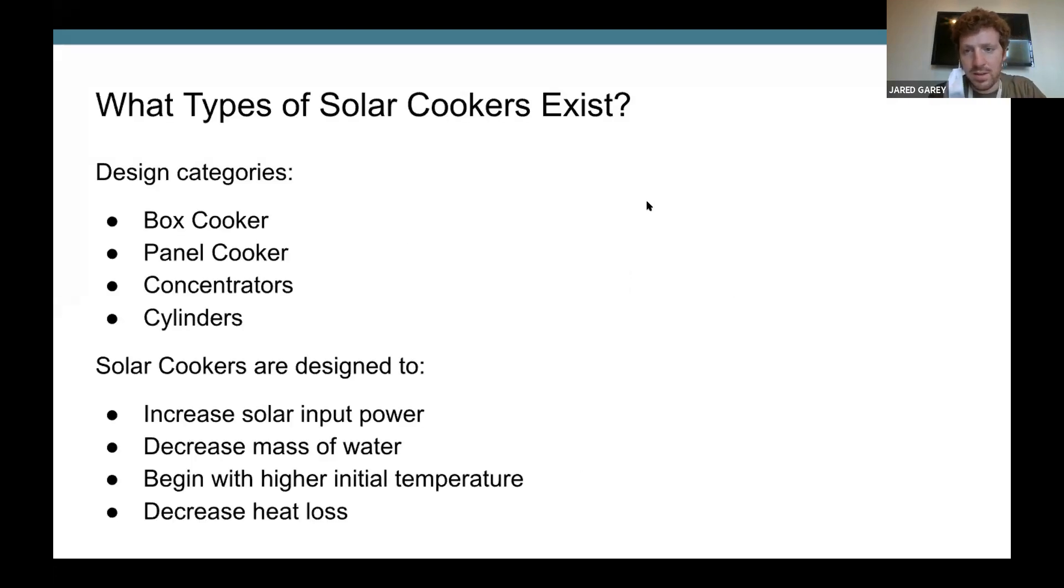So the first thing we researched was what type of solar cookers already exist. And we found that a few different categories of cookers existed. There's the box cooker, the panel cooker, concentrators, and cylinders. And most of what we saw fall into one or more than one of these categories.